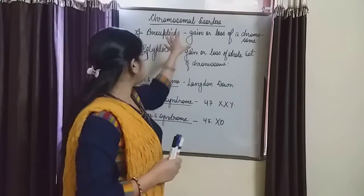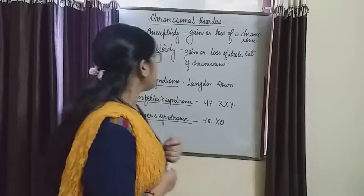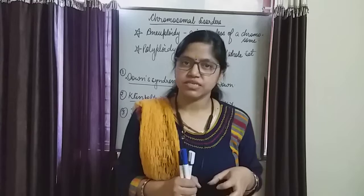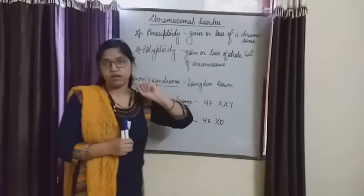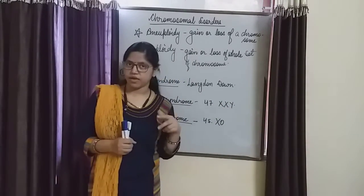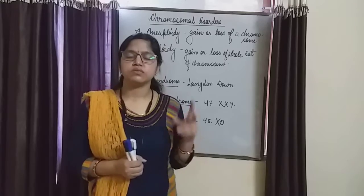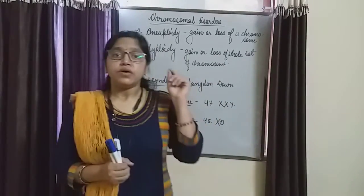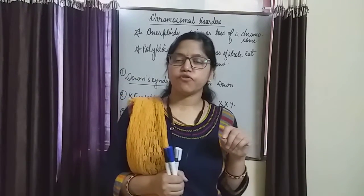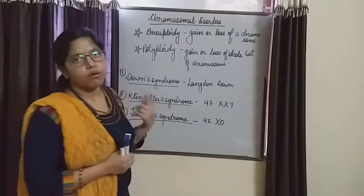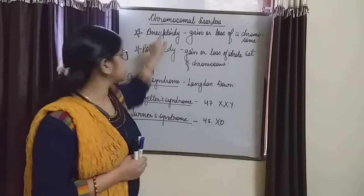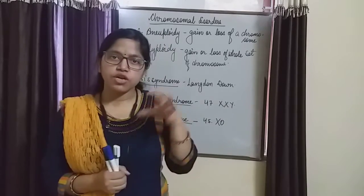There are two terms: aneuploidy and polyploidy. Whenever any gain or any loss of a chromosome takes place due to any mutation, human beings, plants, and animals have a fixed number of chromosomes. But if any extra number of chromosomes is added or deleted, that condition is said to be aneuploidy — involving only one chromosome.